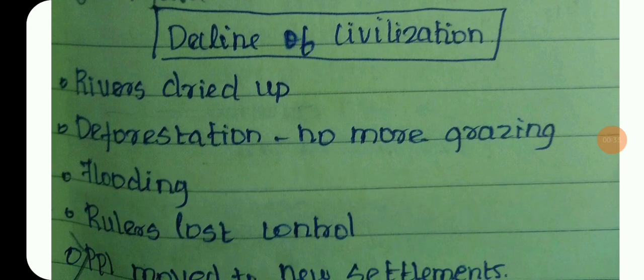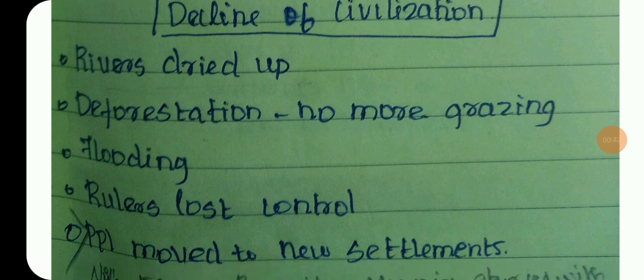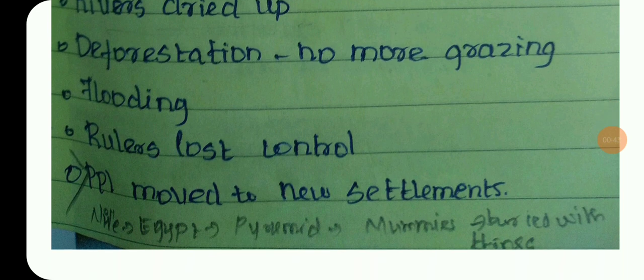The decline of the civilization was caused by rivers drying up, deforestation, flooding, and other important factors. The rulers lost control, and new people arrived.